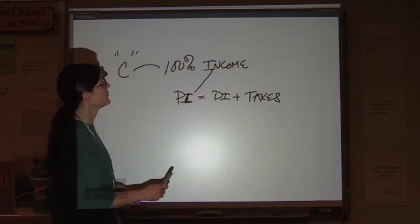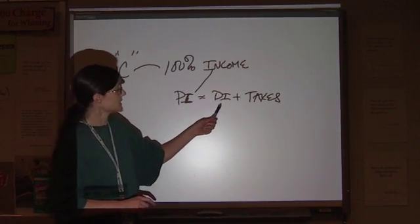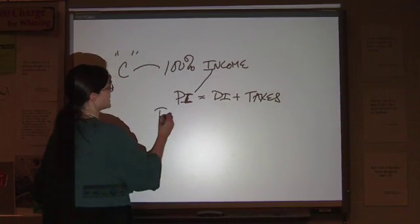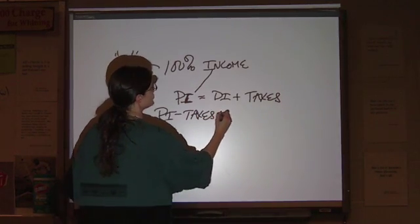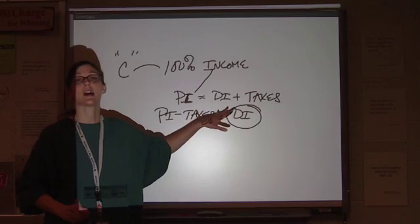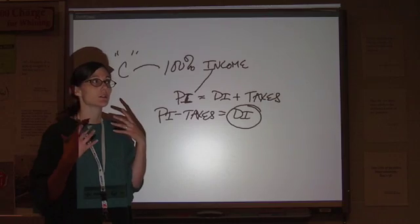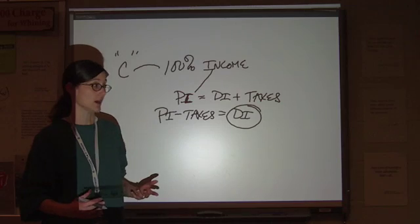So if you have your total personal income, that's equal to your disposable income plus your taxes. If you subtract your taxes out, you get your disposable income. This is actually what the consumer has to play with in terms of spending choices and opportunity costs.